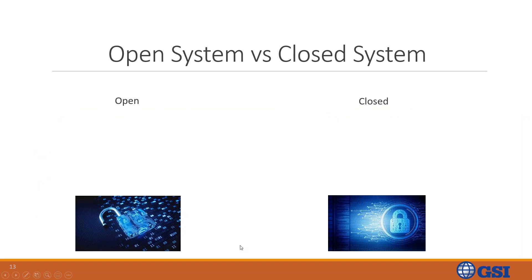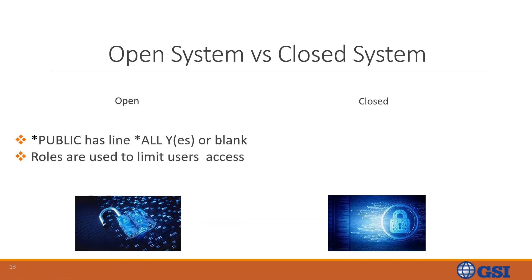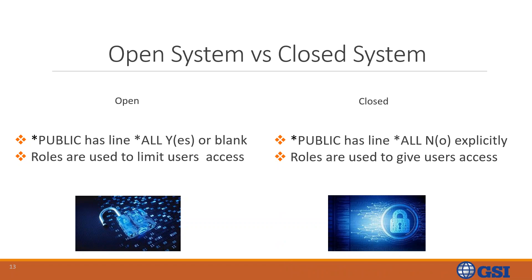What's the difference between an open system and a closed system? In an open system, the STAR public line has star all yes or blank, and the roles are used to limit users' access — meaning a new user entered into the system starts off with all access. In a closed system, the STAR public line has star all no explicitly, and the roles are used to give users access, meaning the user has no access until it is given.